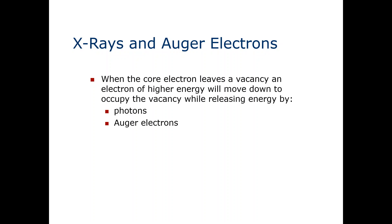So, what actually happens during the XPS spectroscopy process? Just like we mentioned in previous lectures, the key concept of XPS is that we shine X-ray photons on the material surface. As a result, we get photoelectrons emitted from the core shell of the atom, which contain information about the binding energy of that particular atom. When the core electrons leave, a higher energy electron will move down to occupy the vacancy, releasing energy as photons and Auger electrons.